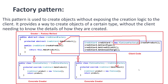The next one is the Factory pattern, which is also a very popular pattern. This pattern is used to create objects without exposing the creation logic to the client. It provides a way to create objects of a certain type without the client needing to know the details of how they are created. In the diagram, we have a creator factory method, a CreditCardFactory, PlatinumFactory, and TitaniumFactory as concrete creators. I will discuss the factory pattern later with a better example as it is a very important design pattern.